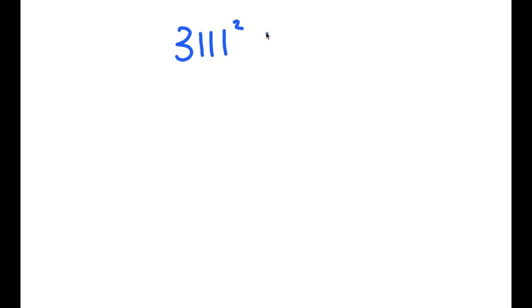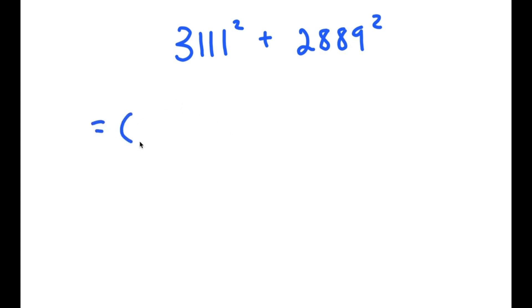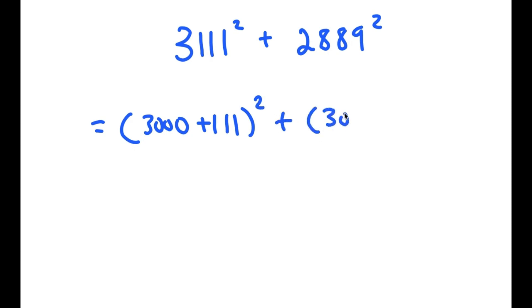In this video, I'm going to solve the problem 3,111 squared plus 2,889 squared. To solve this, I'm going to rewrite this as 3,000 plus 111 squared plus 3,000 minus 111 squared.